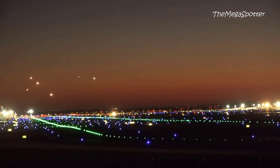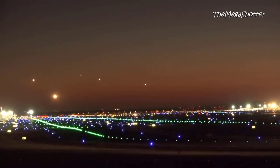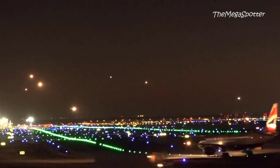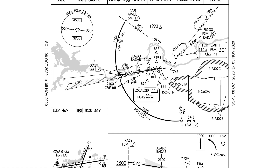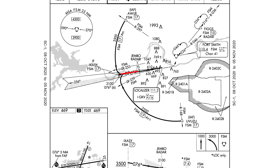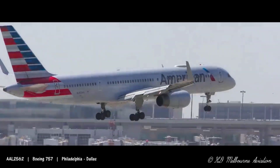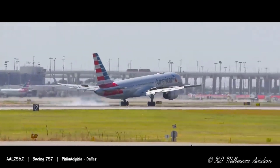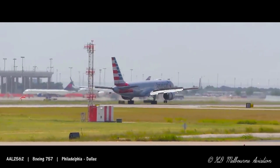The same can be said for most localizer approaches — notice I said most. At many airfields with multiple ILS approaches, sometimes the DME is shared across all ILSs. In that case, the DME is not the slant range distance to the runway, but rather the slant range distance to the ground-based nav aid providing the DME, which may not even be located on the airfield itself. We'll talk about why that's a problem later. First, how do you determine whether or not you need to DME hold for a given ILS approach?